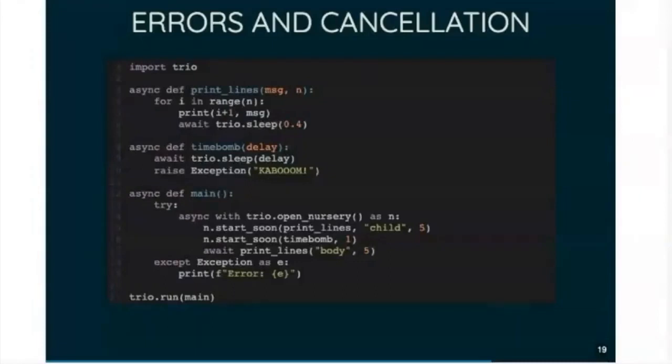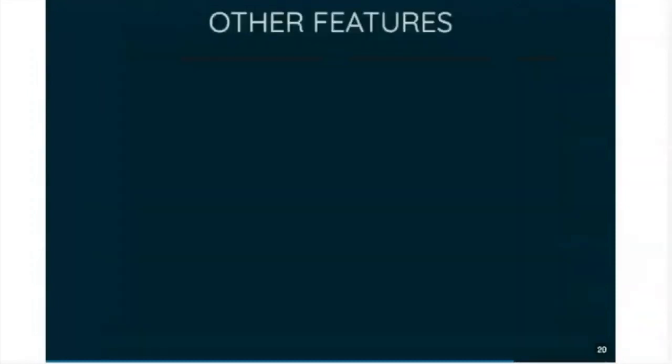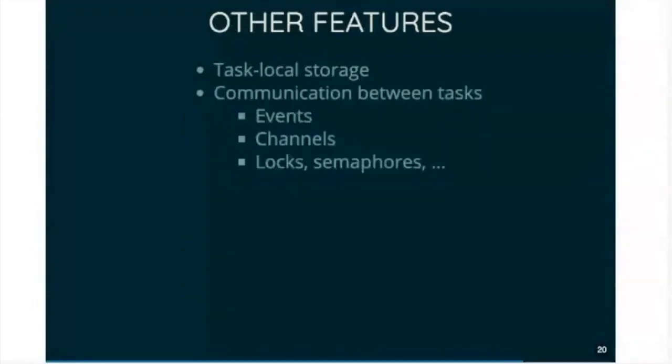And Trio also comes with a whole lot of other features. So it's got task local storage like thread local storage except for tasks. It's got mechanisms for communicating between tasks. So events and channels are the main ways of using communication. But there are also lower-level things, locks, semaphores, et cetera, et cetera, there if you need them.